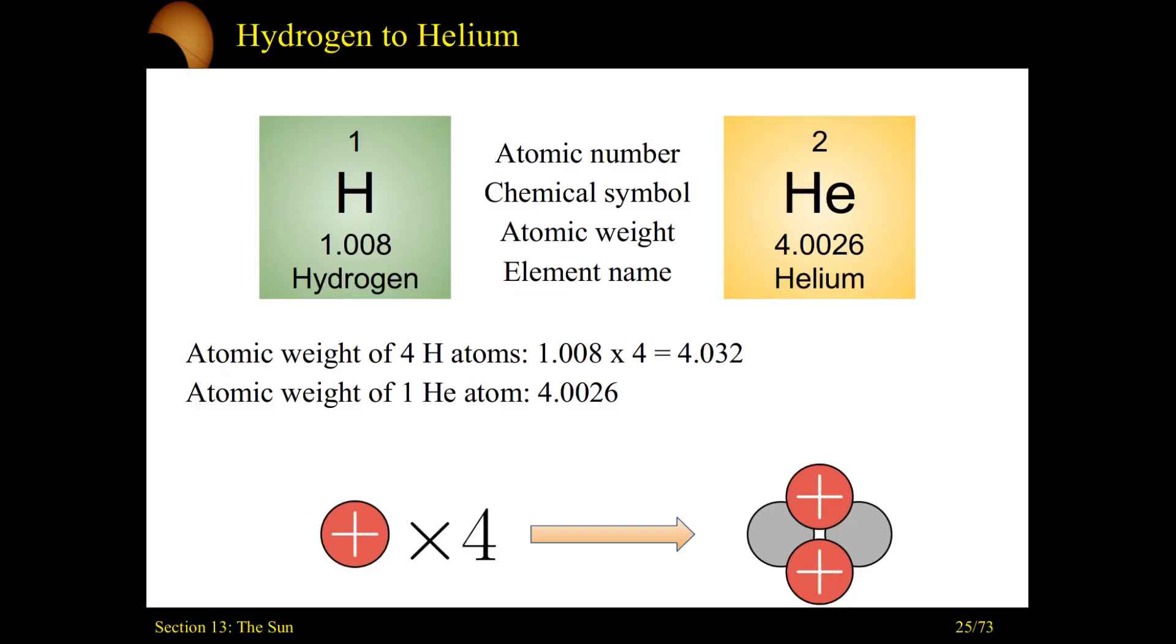So let's start to add things up. If it takes four protons, four hydrogen atoms, to make one helium atom, hey, we know their weights. Let's just add this up. The atomic weight of one helium atom is 4.0026 atomic units. Whereas the weight of four hydrogen atoms is 4.032.